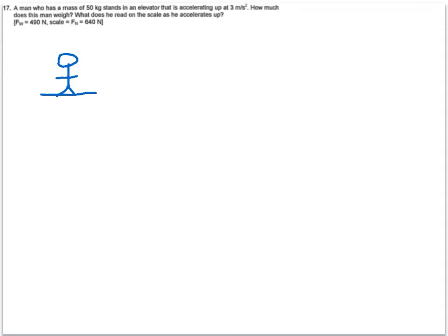So if we look at what forces are on our man, we have the force of gravity going down. Make sure you label it. Normal force going up because he's on a surface. Anytime you're on a surface, you have a normal force. And we also have acceleration pointing up of 3 meters per second squared.